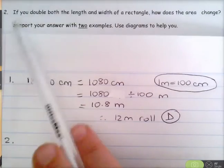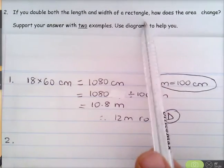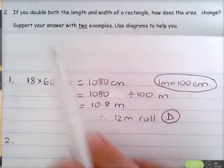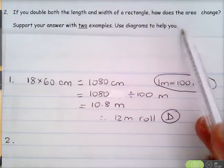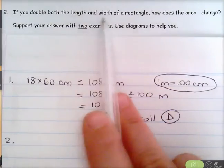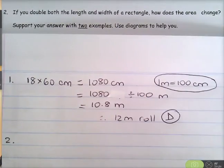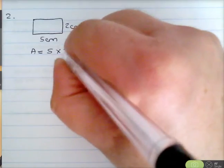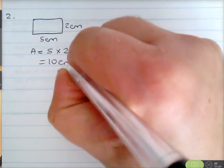Question two: if you double both the length and width of a rectangle, how does the area change? Support your answer with two examples and use diagrams to help. We'll look at a rectangle with a certain length and width, then double both and see how the area changes. Starting with 5 centimeters by 2 centimeters: the area is 5 times 2, which is 10 centimeters squared.